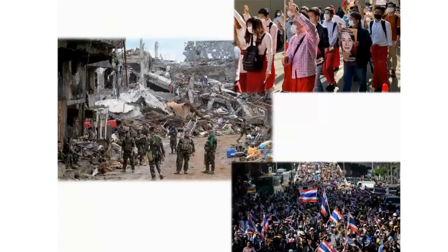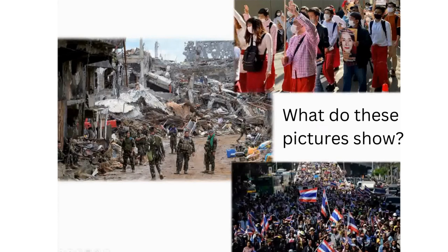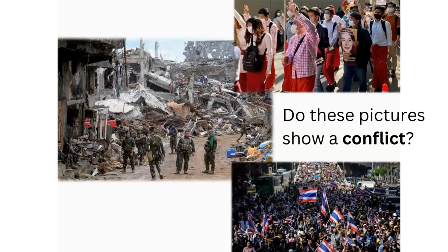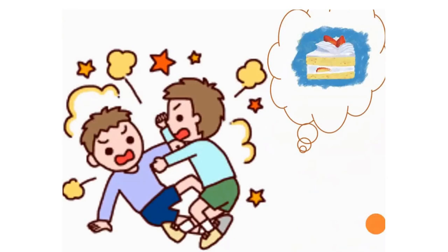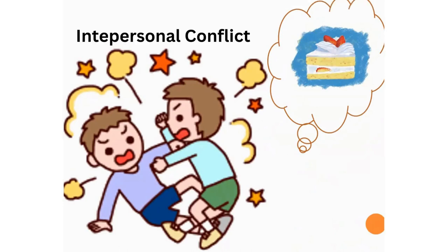This is some of the scenes that you may be familiar with in Southeast Asia. What this picture shows — is this a conflict? Well, this is probably very obvious. Everybody knows conflict is ongoing in Myanmar. Next one: two brothers are fighting over a piece of cake. This is a much more interpersonal level, but we can still define it as a conflict.